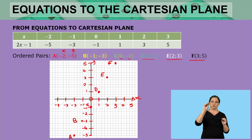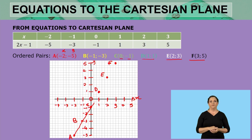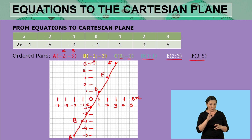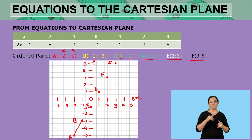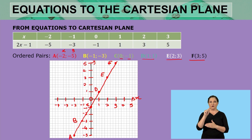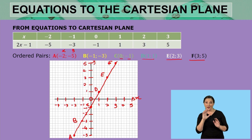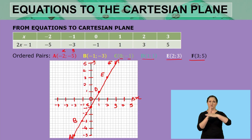Once all ordered pairs are placed, use a ruler and connect all the dots. These dots connect to form one straight line on the Cartesian plane. That is our equation represented on a Cartesian plane. If those points continue, the line will continue as well.